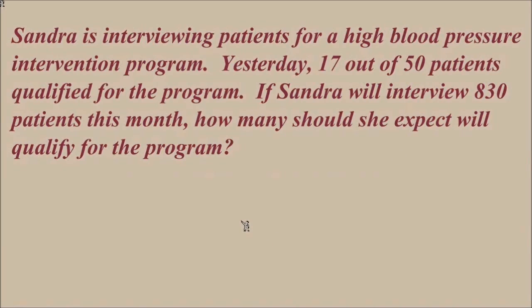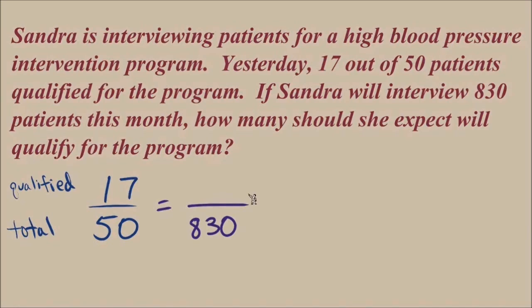Let's set up the first ratio 17 out of 50. When I'm doing proportion problems, I think it's a good idea to actually write out the units or what these numbers refer to. 17 over 50 in this case is 17 patients that qualified out of a total of 50 patients. It's a very helpful move to make sure that we understand what units these numbers represent because our second ratio must have the identical units.